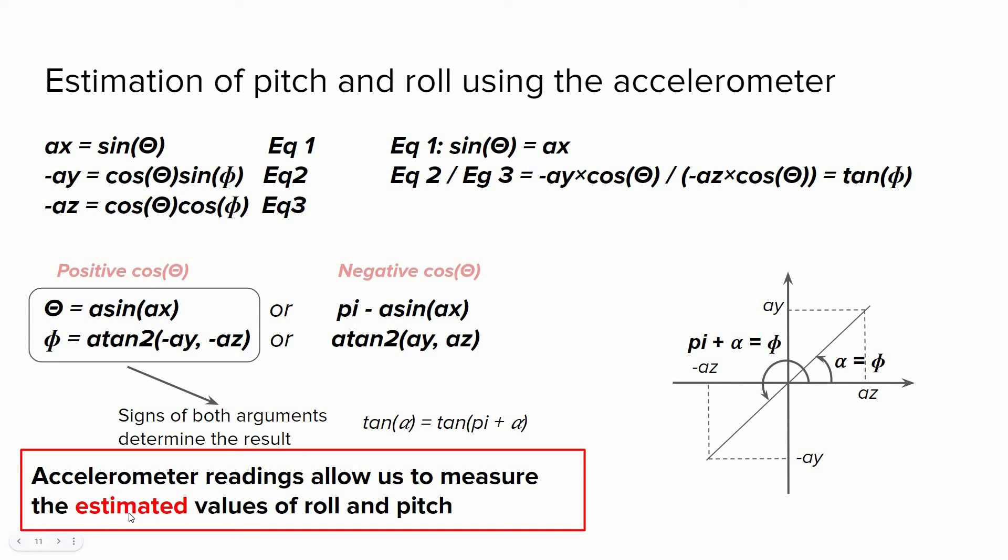And pay attention to the word estimated. We don't know the actual values of roll and pitch because we don't know the sign of cosine theta, but we just assume that this is positive. Next, we will implement these equations to estimate roll and pitch using the accelerometer readings.